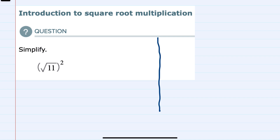The first approach is that we can simplify a radical expression by moving the root into the denominator of the power. So I could rewrite this as 11, where the original 2 exponent would be the numerator of the exponent, and the root 2 would be the denominator of the exponent.